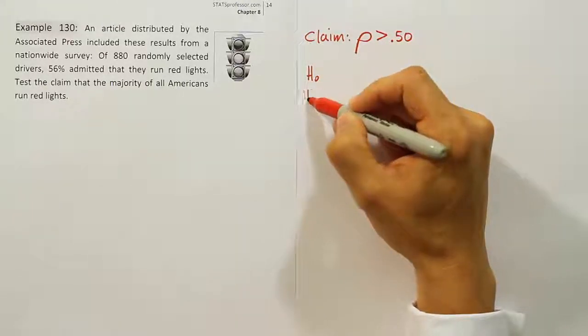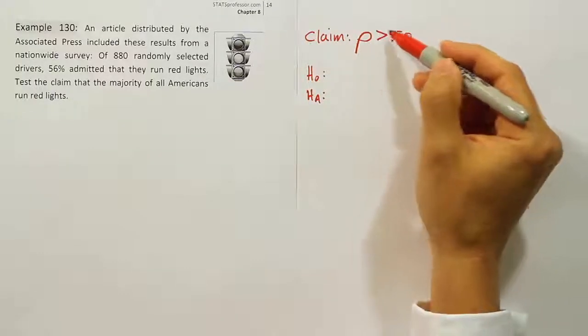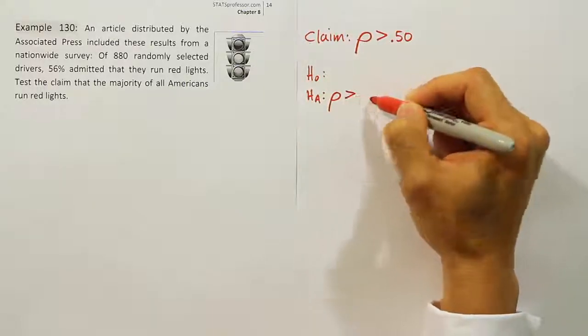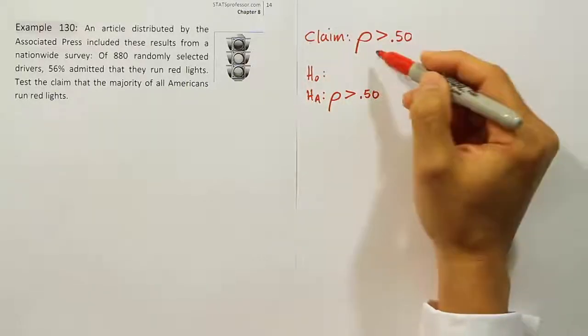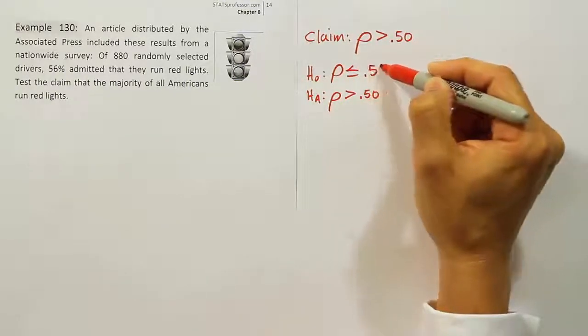Let's write the null hypothesis and alternative hypothesis. The claim has a greater than symbol, which means it's the same as the alternative hypothesis. So HA: p > 0.50. The opposite idea would be the null hypothesis, so H0: p ≤ 0.50.